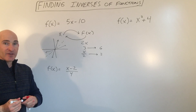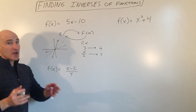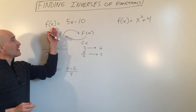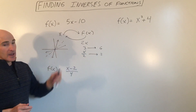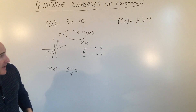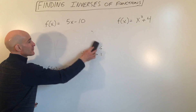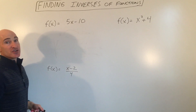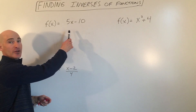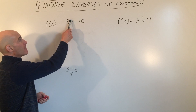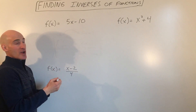Suffice it to say, what we're trying to do is reverse that whole process of going from the input to the output. So I'll show you some more examples on how we're going to do that. There are a couple of different ways to approach this. One way is an intuitive way. Following the order of operations, I'm multiplying x by 5 and then subtracting 10.